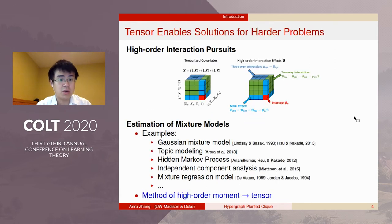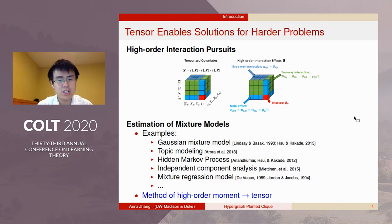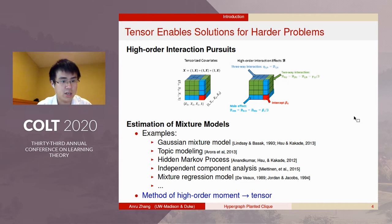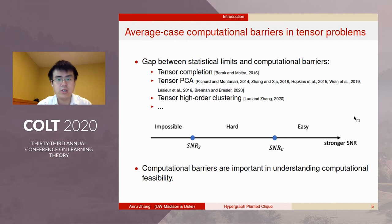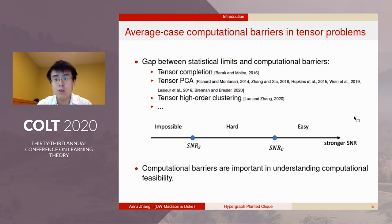In many other problems, although the datasets themselves are not tensors, by transforming them into a tensor format, things can become easier. In many tensor problems, such as tensor completion, PCA, and clustering, there is often a gap between statistical limits and computational barriers.